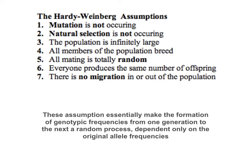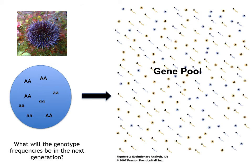So in order for the allele frequency to stay the same from one generation to the next and for this Hardy-Weinberg model to be valid, you have to follow these assumptions. What these assumptions do is make the formation of genotypic frequencies from one generation to the next a purely random process — dependent only on the original allele frequency. At first glance you might think all those assumptions are pretty ridiculous — it's hard to imagine any real population satisfying all of them.